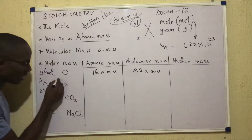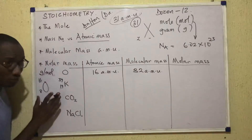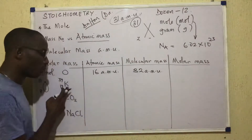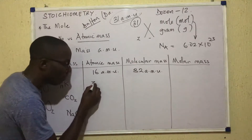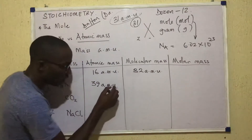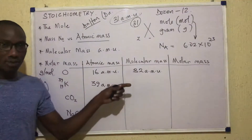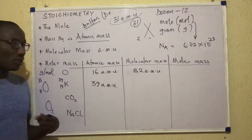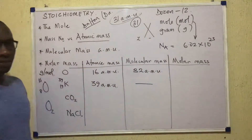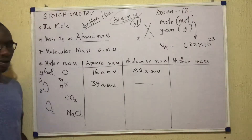Potassium does not form molecules, so we cannot give it a molecular mass. It only has an atomic mass.